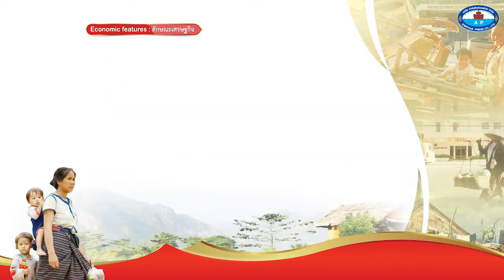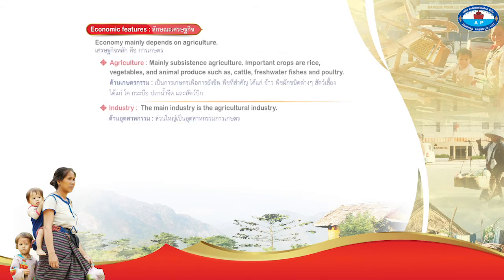Economic Features: The main economy depends on agriculture. It is subsistence agriculture in Laos. Important crops are rice and vegetables, and important economic animals are cattle, freshwater fish, and poultry.